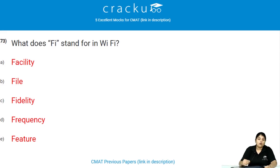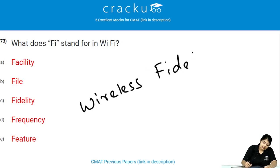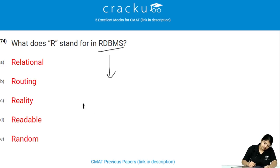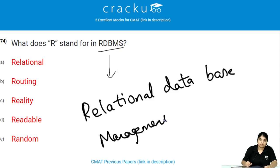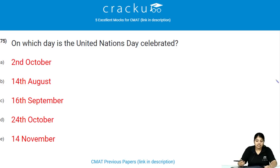What does 'fi' stand for in Wi-Fi? Wi-Fi is Wireless Fidelity, therefore 'fi' in Wi-Fi stands for Fidelity. What does R stand for in RDBMS? RDBMS is Relational Database Management System.